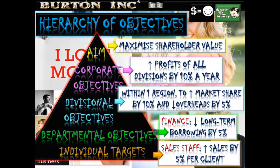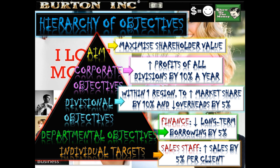There is a hierarchy of objectives. Starting from aims, down to corporate objectives, then divisional objectives help achieve corporate direction. Department objectives need to be met to achieve divisional objectives, and individual targets within departments feed into departmental objectives. You can see there's a clear hierarchy where the bottom ones feed into the ones higher up.